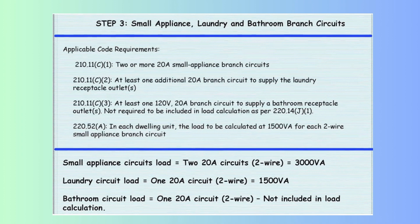Important 2023 NEC updates: GFCI protection requirements are expanded — all 125-volt through 250-volt receptacles installed in kitchens, regardless of location, must have GFCI protection. This includes receptacles serving appliances such as dishwashers, refrigerators, and microwaves, whether cord-and-plug connected or hardwired. AFCI protection is required for all 15- and 20-ampere branch circuits supplying outlets or devices in dwelling unit kitchens, family rooms, dining rooms, living rooms, parlors, libraries, dens, bedrooms, sunrooms, recreation rooms, closets, hallways, laundry areas, and similar rooms. These updates ensure enhanced safety by mitigating risks associated with electrical faults in residential settings.